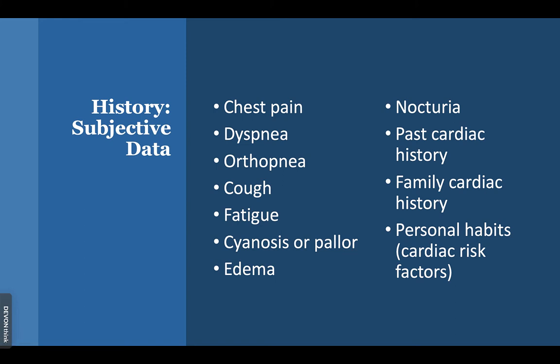Ask about fatigue or activity intolerance — can they not walk as much as they used to? Those are signs of worsening cardiac disease. Do they have cyanosis or pallor? If the heart is not pumping enough oxygen, there's a disruption between supply and demand. The body activates the sympathetic nervous system and pumps out epinephrine, a potent vasoconstrictor. In patients with different skin tones, instead of looking pallor or cyanotic, they may look ash-colored.